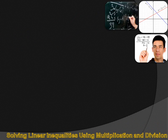When solving inequalities using addition or subtraction, it's just like solving an equation — as long as you add or subtract the same number to both sides of the inequality, everything remains the same.